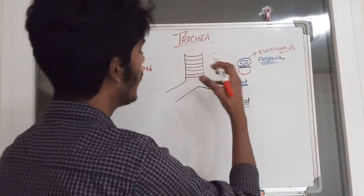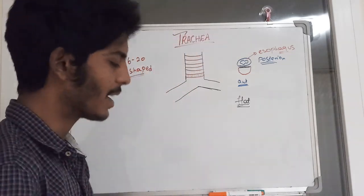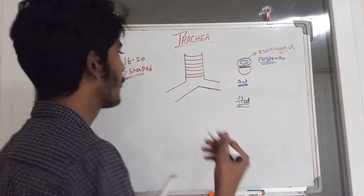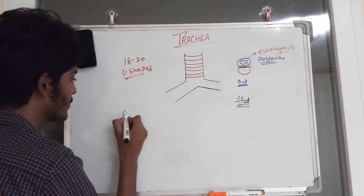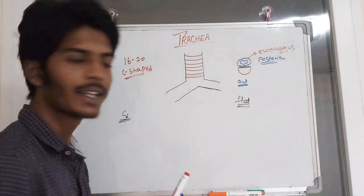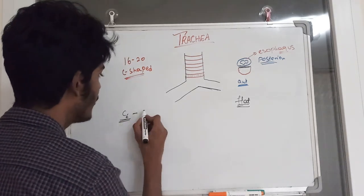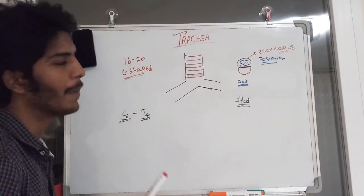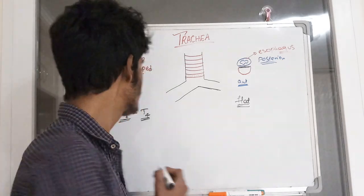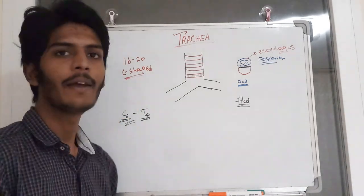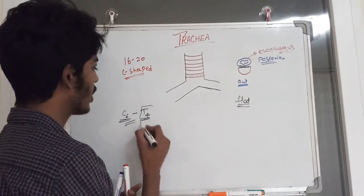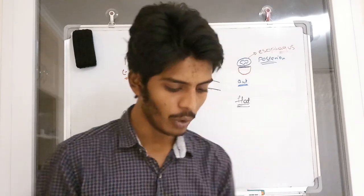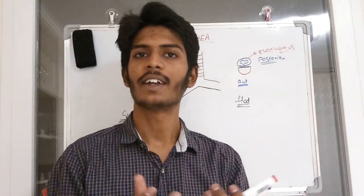The trachea starts at the level of C6 (cervical vertebra 6) and ends at the level of T4 (thoracic vertebra 4). The part from C6 to C7 is the cervical part, and the part from T1 to T4 is the thoracic part of the trachea.